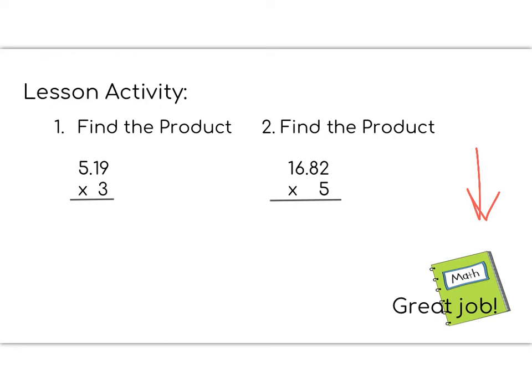I'm actually going to do 1 with you, and then you can do number 2 on your own. So when we multiply, we are going to multiply straight up just like we normally would if that decimal wasn't there. So 9 times 3 is 27. 3 times 1 is 3, plus 2 is 5. And 3 times 5 is 15.